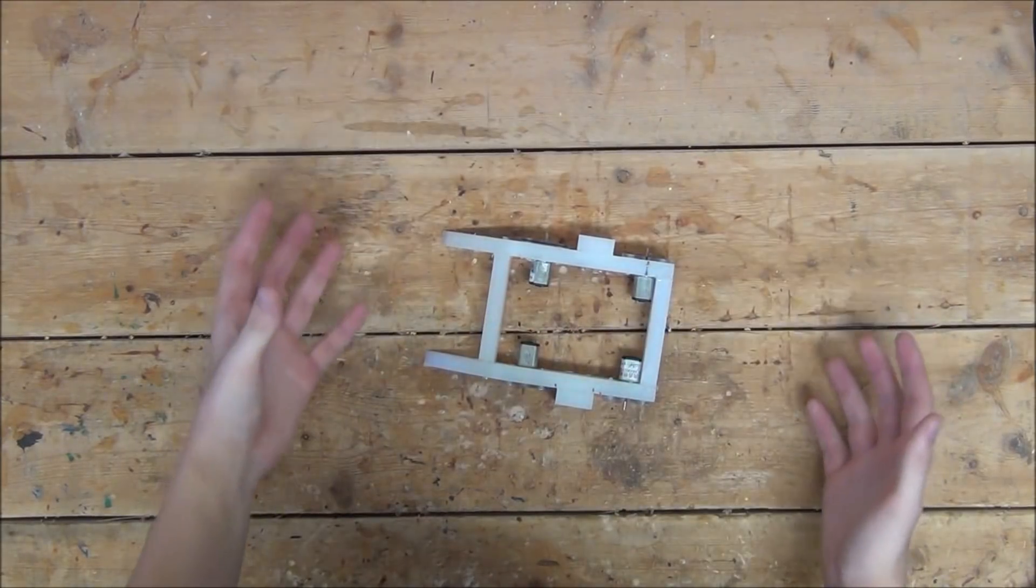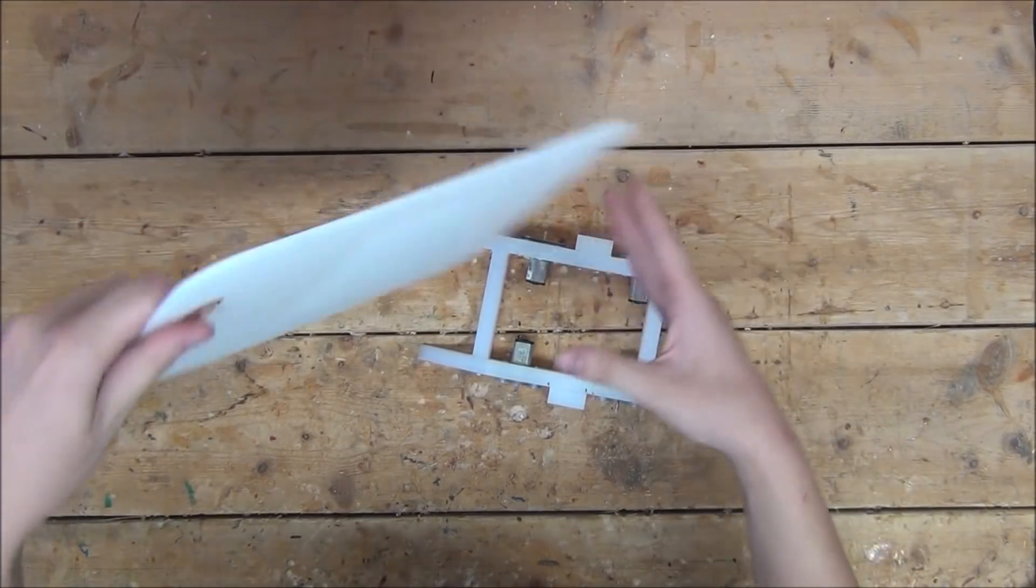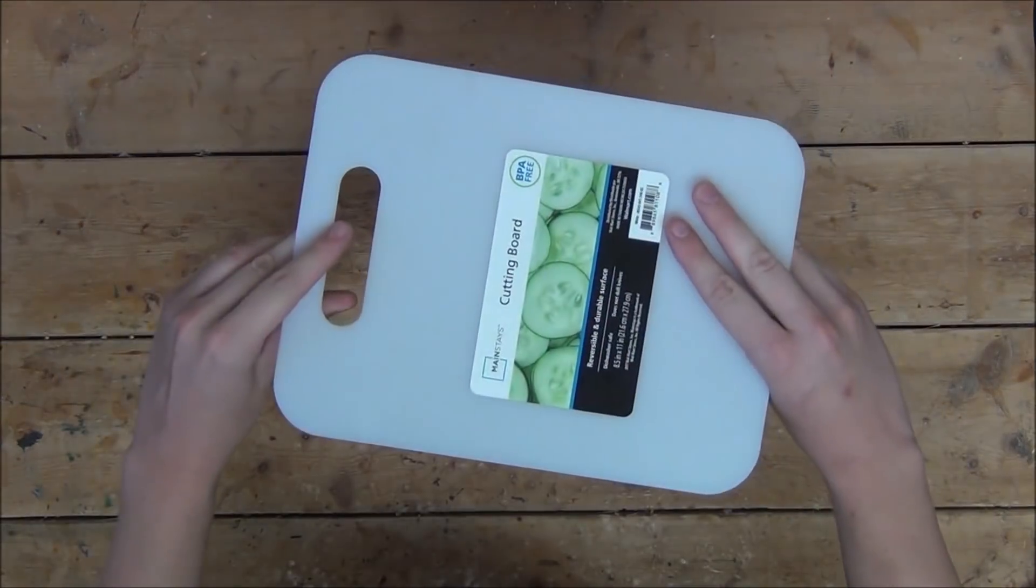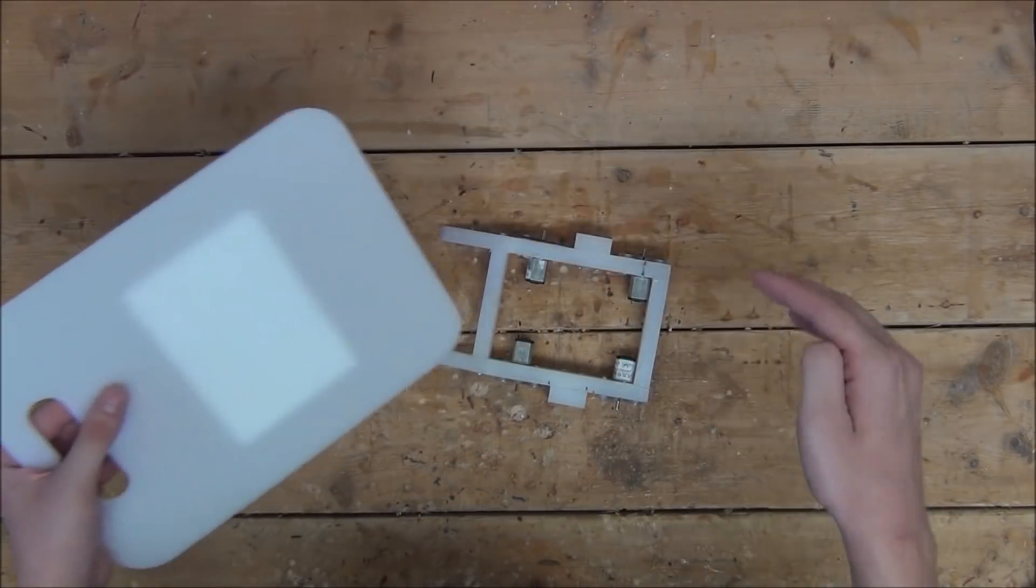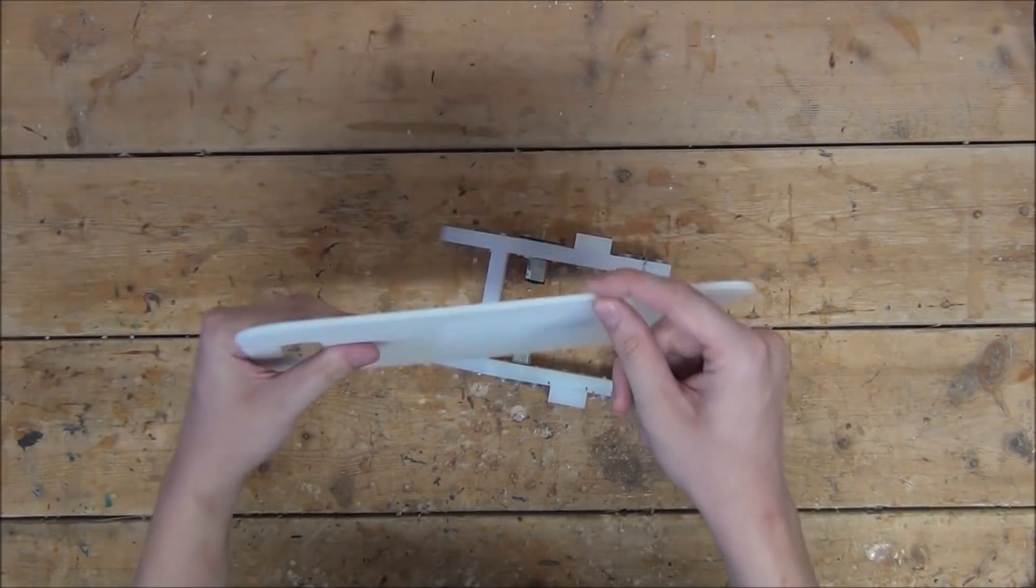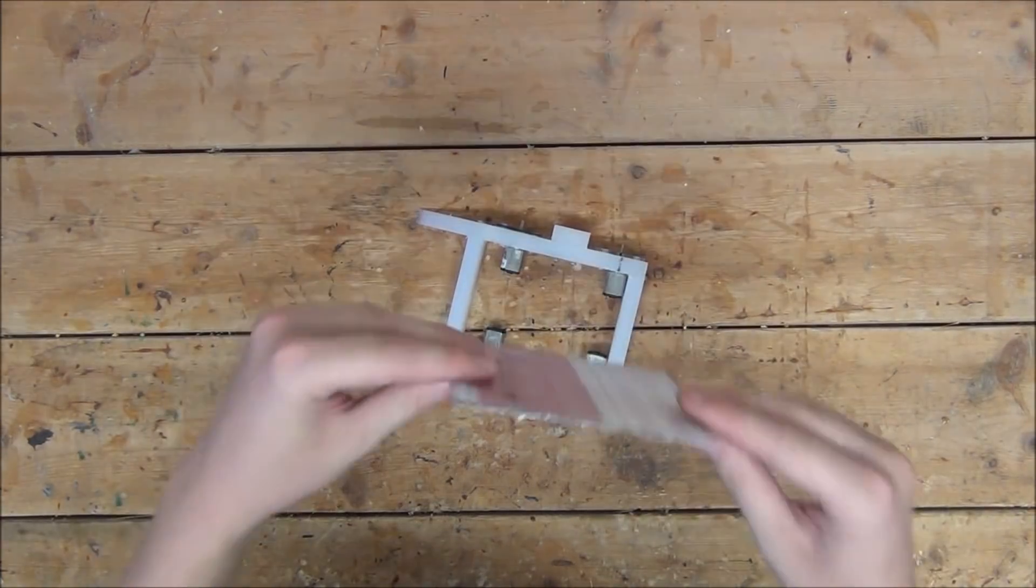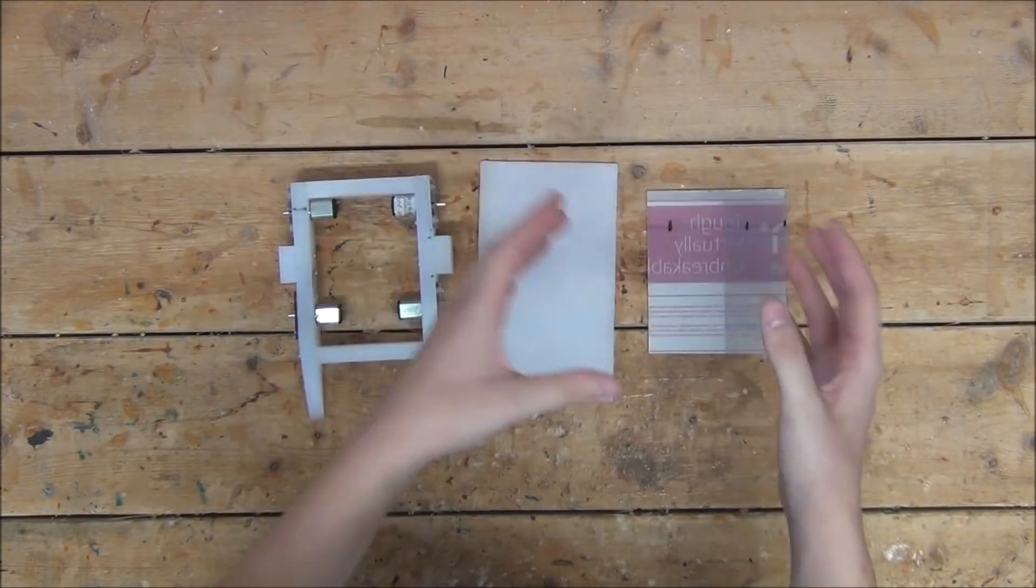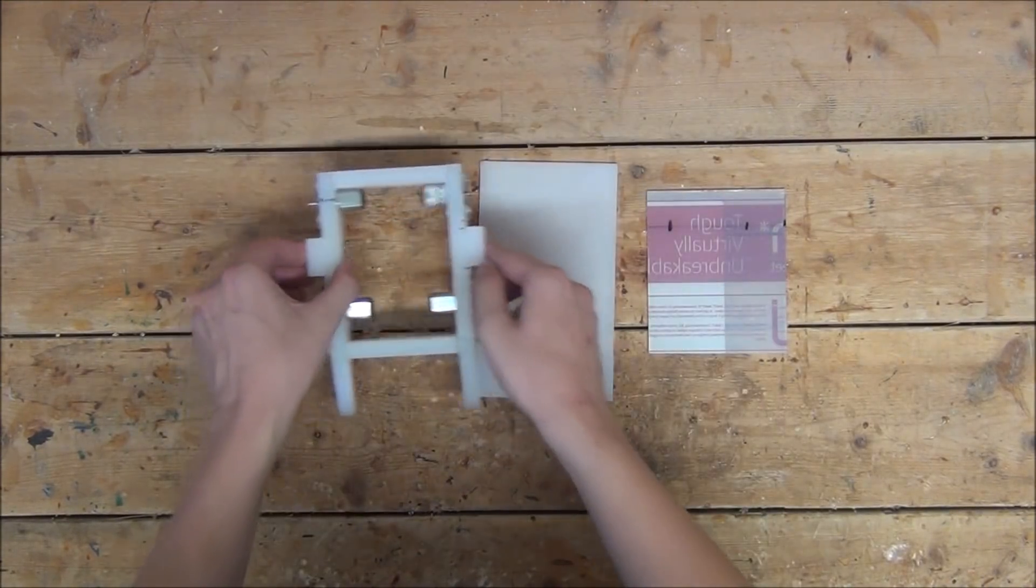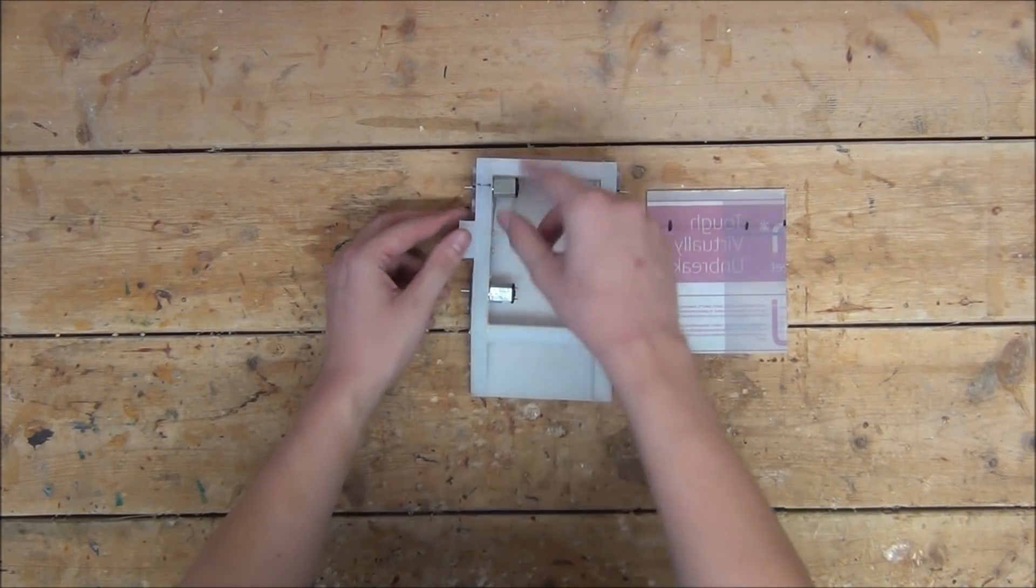Now we're going to want to cut out and bolt on the top and bottom covers. For the bottom, I'm going to use this super thin cutting board I picked up at Walmart for $0.88. It's made from pretty much the same material as the rest of the frame, and since it's only an eighth of an inch thick, it should be perfect. And for the top cover, I'm just going to use an eighth of an inch thick piece of Lexan. Now, we're going to want to bolt these onto the frame, but before we do, I'm going to mark out and attach our motor blocks to the top and bottom covers, like we talked about earlier.